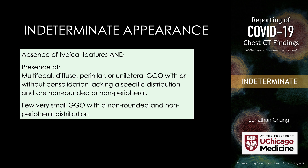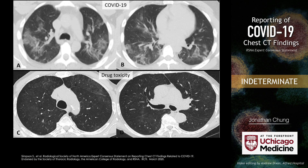So what are these indeterminate imaging findings? First, no findings that suggest a typical imaging appearance. Then things like multifocal, diffuse, perihilar, or unilateral ground glass opacity, whether or not you have consolidation, and a few very small areas of ground glass opacity with a non-rounded and non-peripheral distribution. You can't have features that are typical for COVID-19 to be part of this imaging category. Here are some examples: a random axial distribution of ground glass opacity, not peripheral predominant. If you have high clinical suspicion for COVID-19, you would not exclude this patient for that infection.